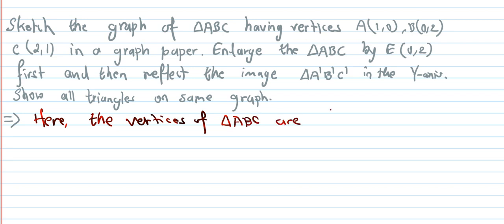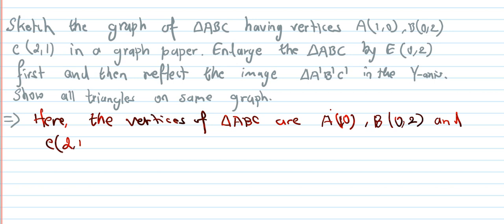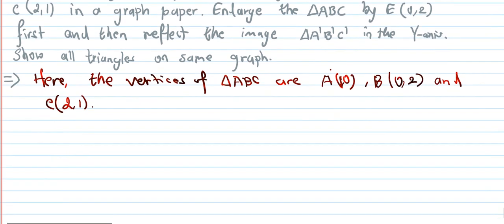The vertices of triangle ABC are: A(1,0), B(0,2), and C(2,1).